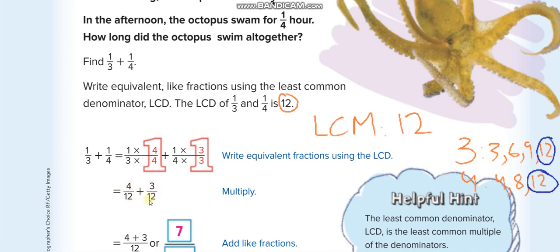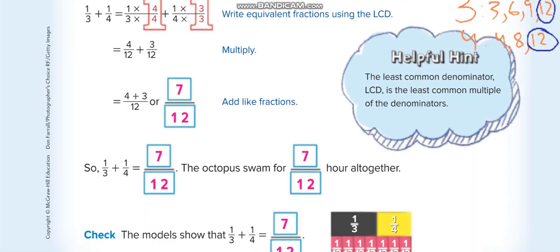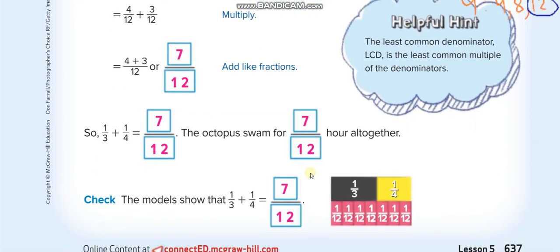4 over 12 plus 3 over 12 equals 7 over 12, and this is already simplified.